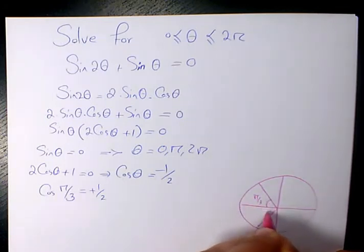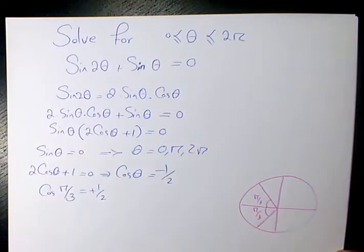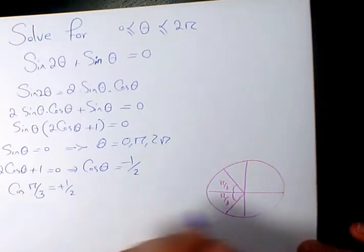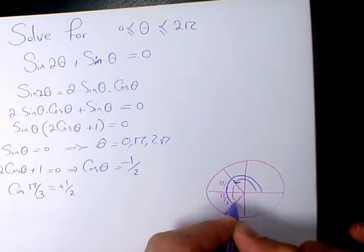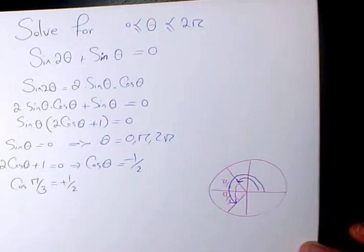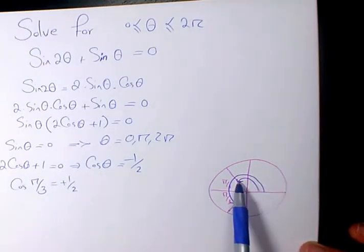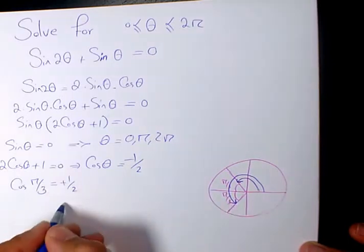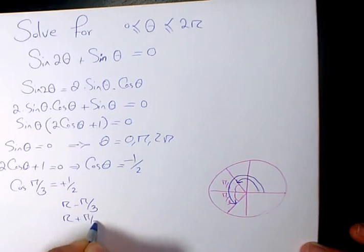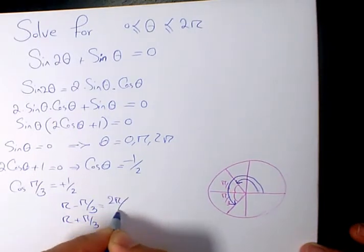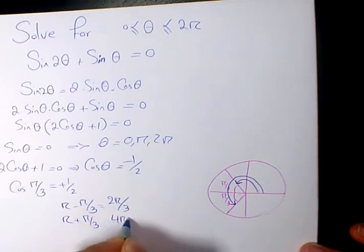The reference angle is pi over 3. So we have two cases, one in quadrant 2 and one in quadrant 3. The first one is pi minus pi over 3, the second is pi plus pi over 3. So we have 2 pi over 3 and 4 pi over 3.